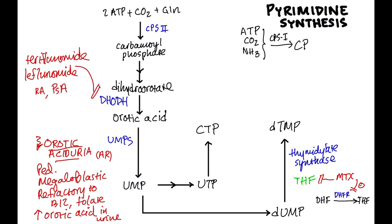Another way to block thymidylate synthase more directly is through 5-fluorouracil, which is used as both an immunosuppressant and a chemotherapeutic agent. 5-fluorouracil gets converted in vivo to 5-fluoro-dUMP, which competitively inhibits thymidylate synthase by competing with dUMP. This blocks dTMP production, prevents DNA synthesis, and blocks cell replication at the S phase of mitosis.